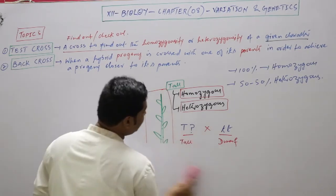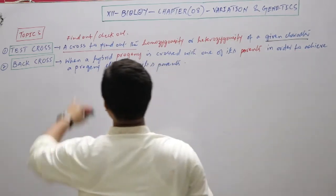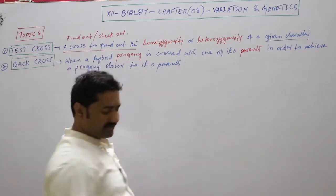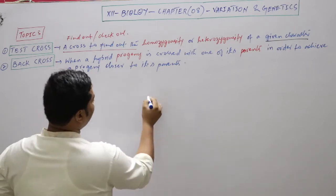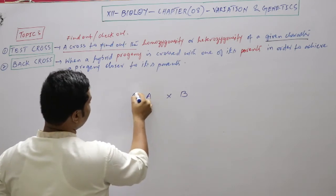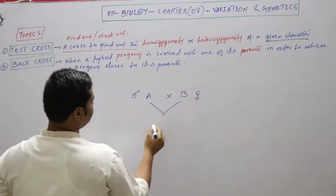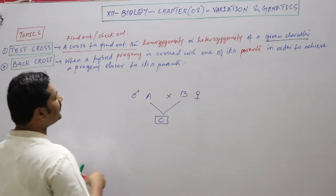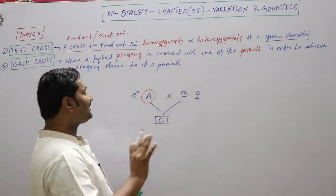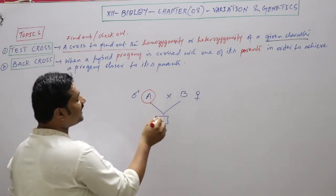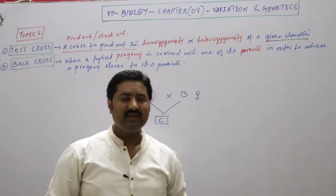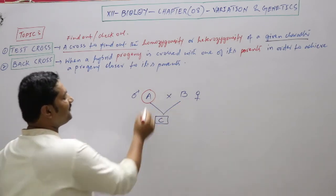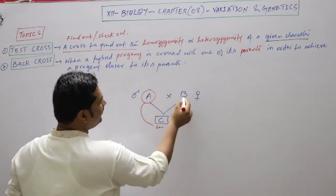Now, back cross. When a hybrid progeny is crossed with one of its parents in order to achieve a progeny closer to its parents — that is a back cross. For example, consider a racing horse: one is male (A) and one is female (B). The hybrid progeny gets 50% characters from A and 50% characters from B.